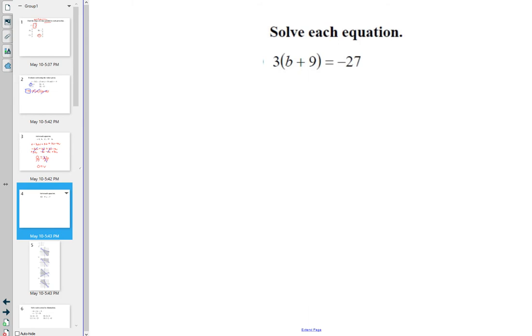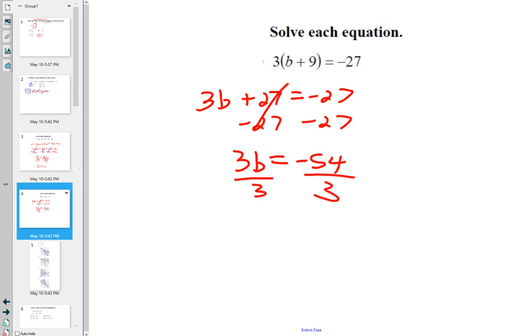I don't know how this one would do so much. Distribute 3v plus 27 is equal to negative 27, minus 27, minus 27. 3v equals negative 24, divided by 3, v equals negative 18.